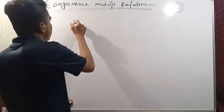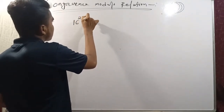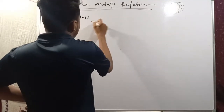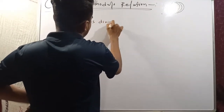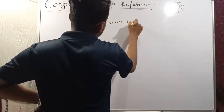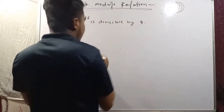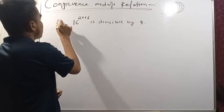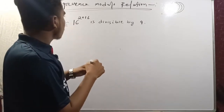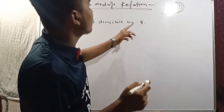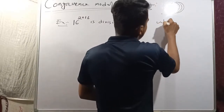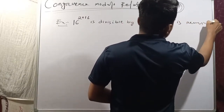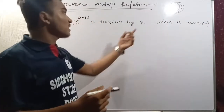The problem is: 16 to the power 2016 is divisible by 9. Using congruence, what is the remainder? What is the remainder? This is the demo question.